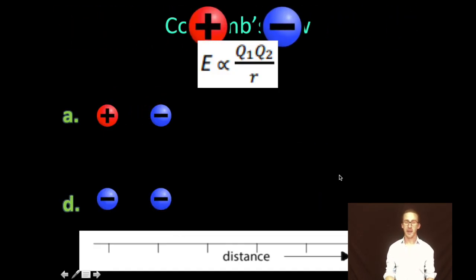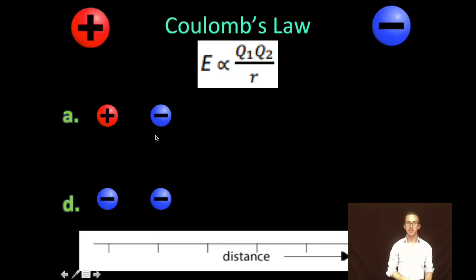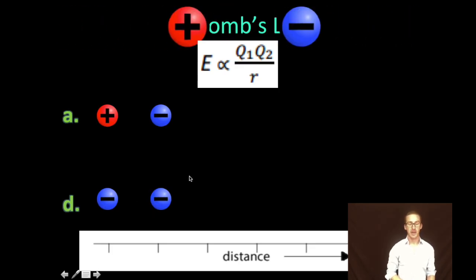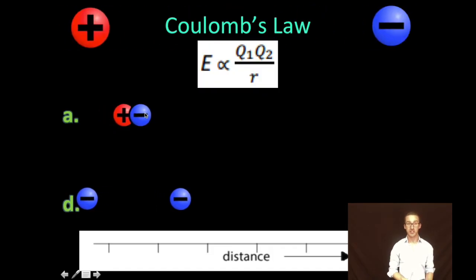Now in this example, as we look to compare A and D, now this time, notice that they are the same distance from one another, but now we've got opposite charges here and like charges here. Assuming they're the same magnitude, they will attract and repel with the same energy, but again, it'll be attraction here of those opposite charges, repulsion with those like charges.